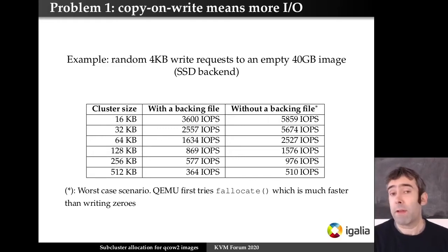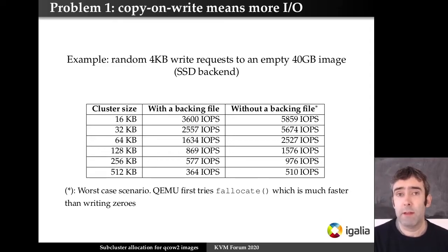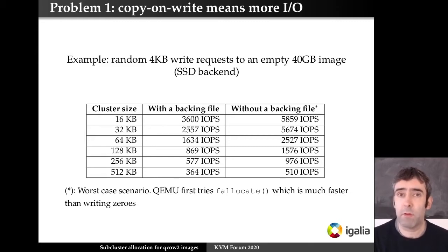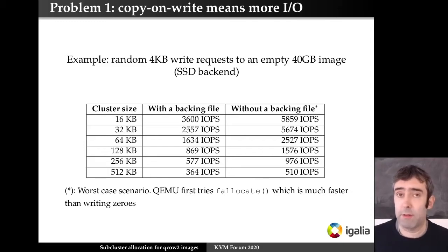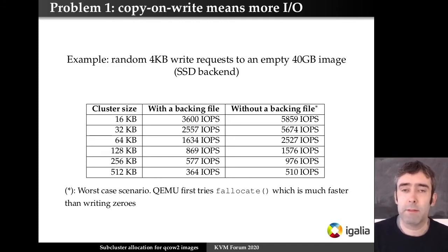It's worth mentioning that if you don't have a backing file, we fill the cluster with zeros, but QEMU nowadays uses fallocate to try to fill it in a more efficient way. If the filesystem and OS support it, this is very fast and the cluster size doesn't have any effect. But if that doesn't work, it goes to the slow path of writing actual zeros to disk, as shown in the table. If there's a backing file, however, there's no alternative — we need to go to the backing file and get the data, so that's where cluster size has an effect.